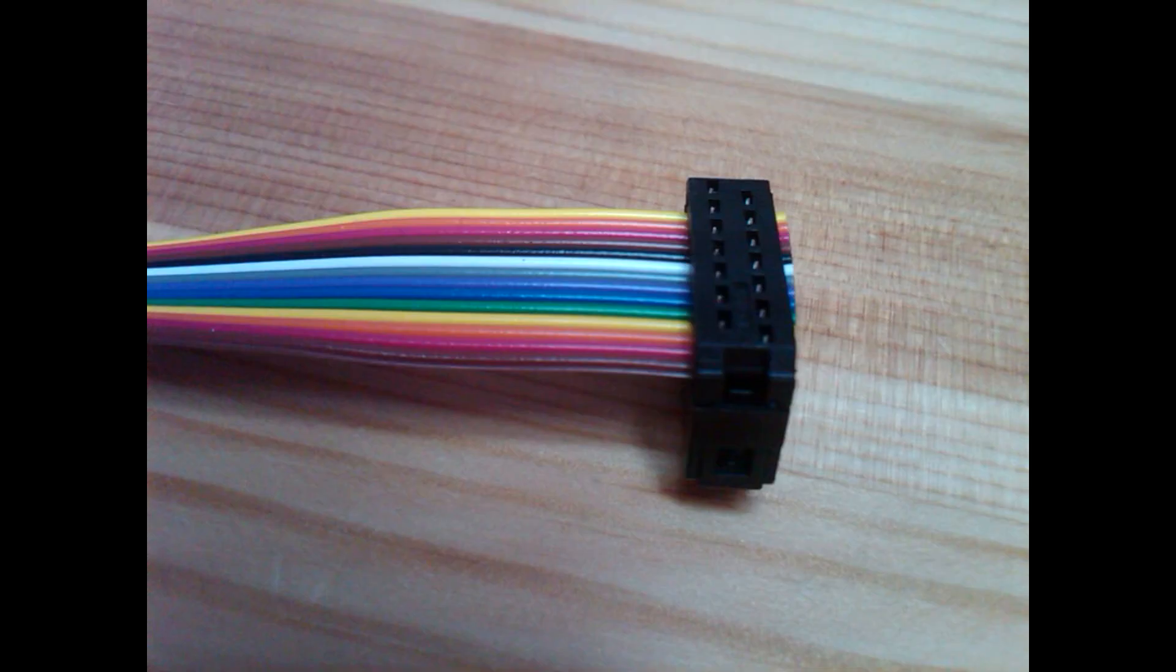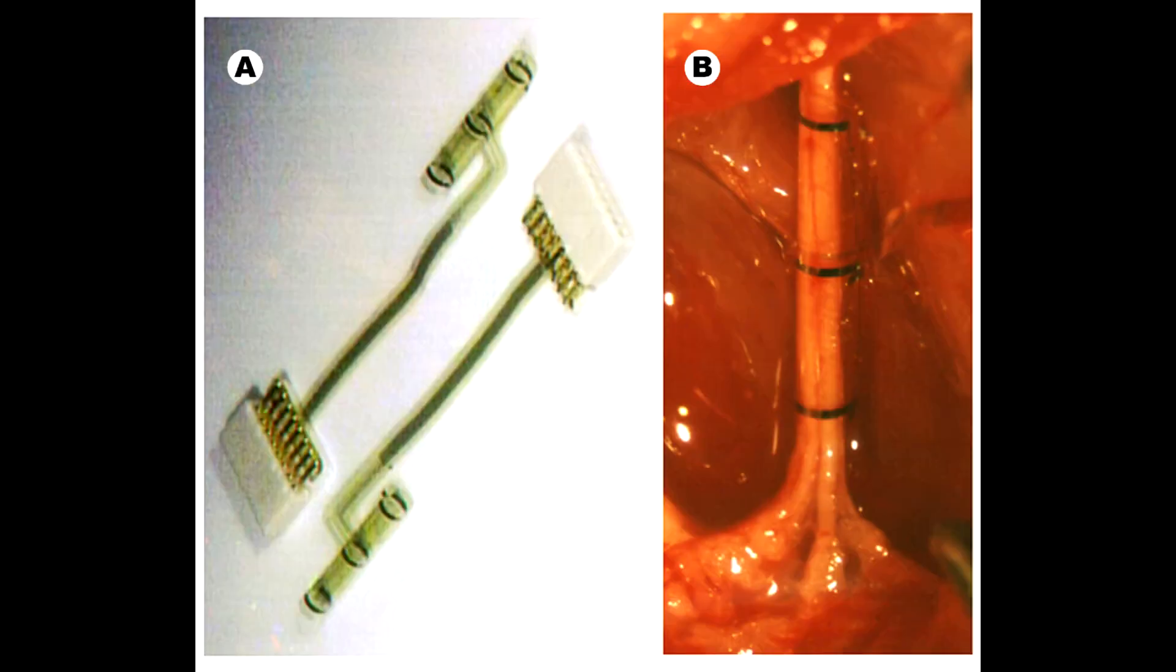The key to targeting axons deep in the anterior nerve is to fillet them out like the headers on a ribbon connector by using a flat cuff instead of the traditional round design.